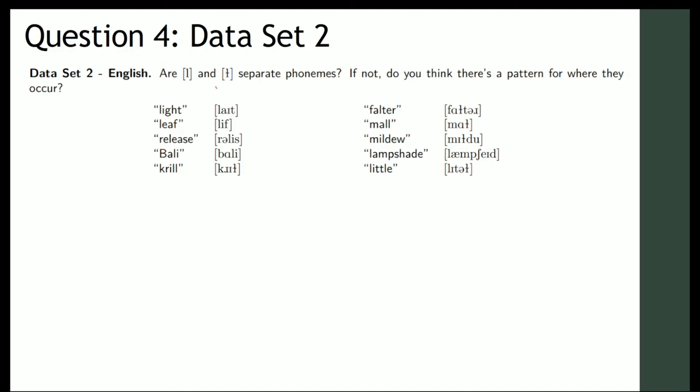So this L with a little squiggle in it is a velarized L. So it's the regular L but there's some velarization in there. Tongue is up against the velum. So let's see if there's a pattern here. And this one's actually a little bit tougher than the other ones. And I'll show you why. So first of all, we can look for minimal pairs. Do we see a minimal pair? No. Okay, great. Next step.